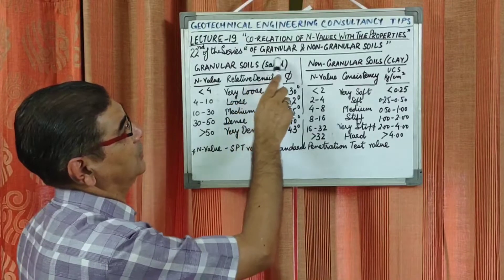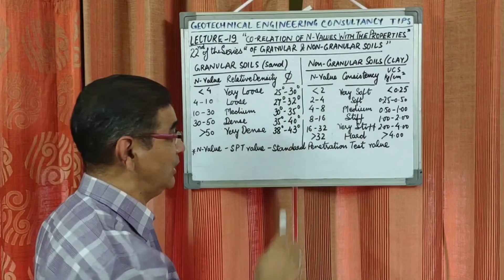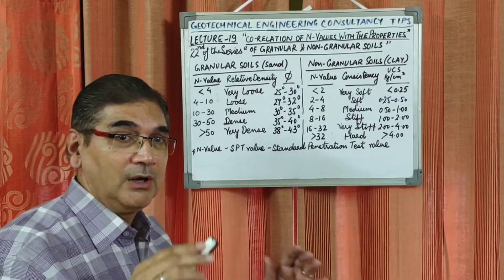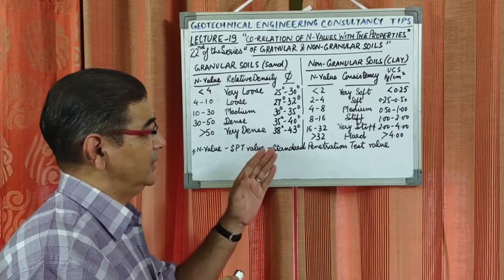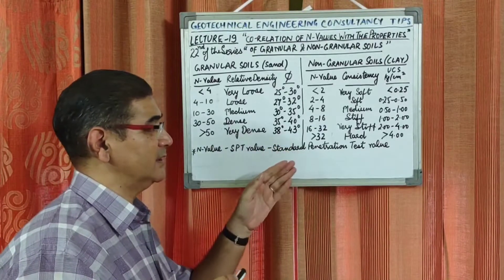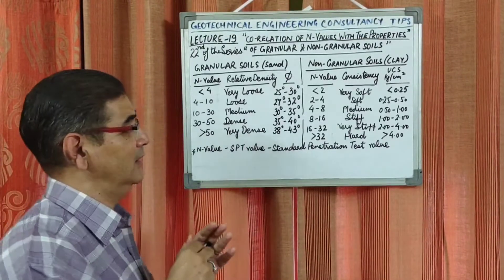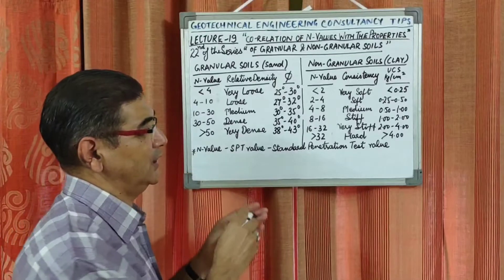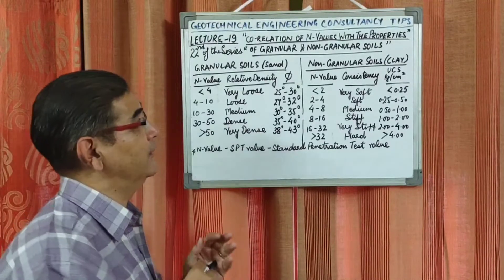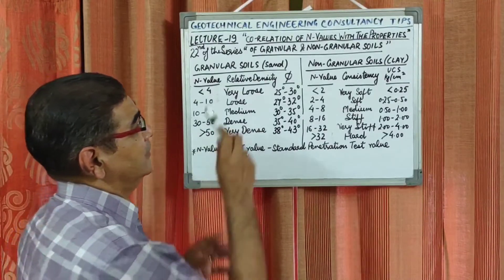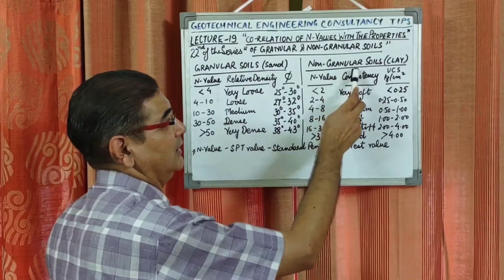Today's topic is the correlation of N-values with the properties of granular and non-granular soils. The N-value — the SPT value — which is famous as the Standard Penetration Test all over the world, is a very important test in geotechnical engineering foundation design. Granular refers to sandy soil and non-granular refers to clay soil.